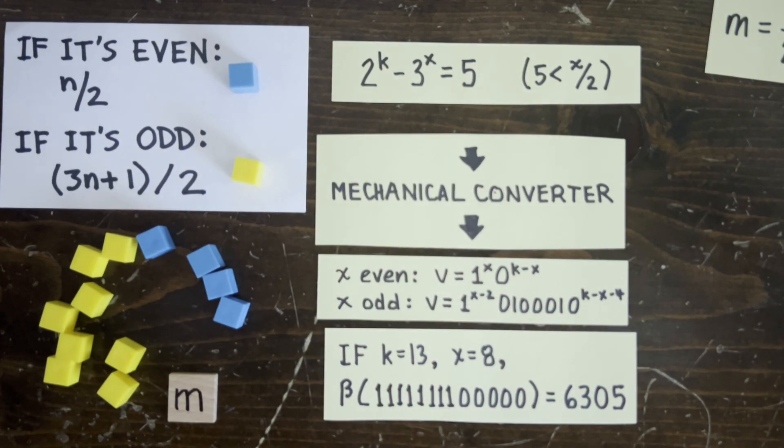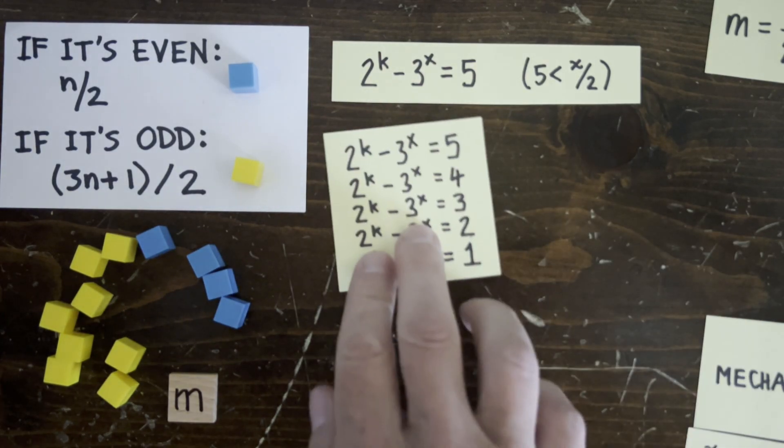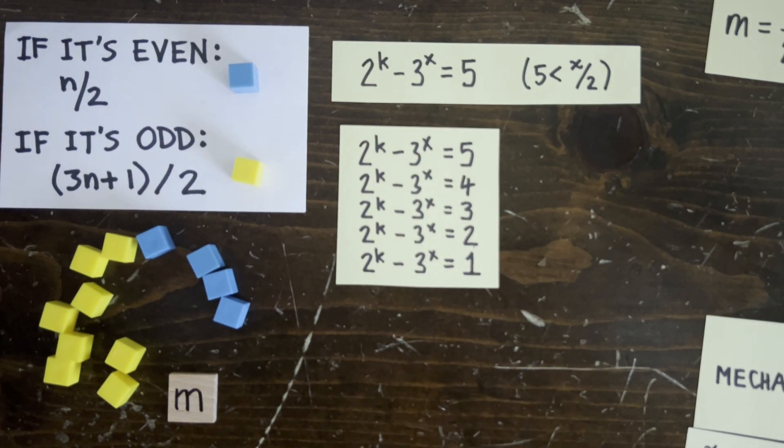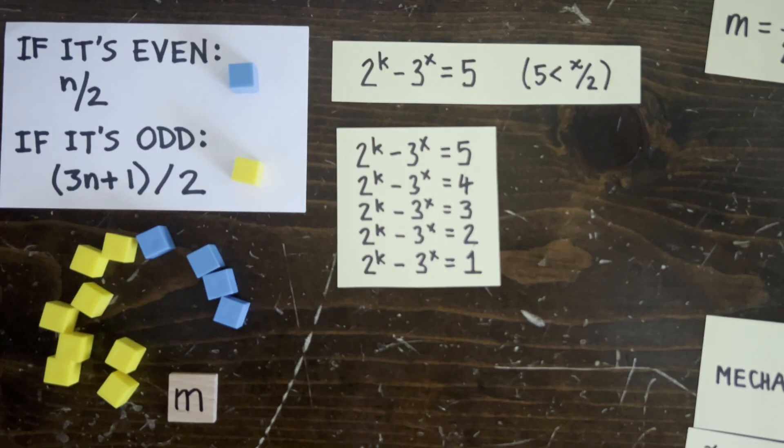Well, that proves a special case of proposition B, namely that 2 to the k minus 3 to the x is greater than 5. Hold on, we only refuted this. We need to refute these also, but that's easy, because it can't be 1 because of Gersonides, and it can't be even because it's an even minus an odd, and it can't be divisible by 3 either.